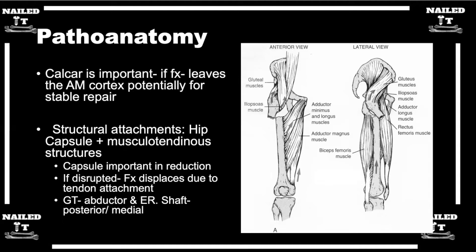In this cartoon, this is a classic subtrochanteric fracture where it exits more distal — distal to the lesser trochanter. The lesser trochanter is attached to the proximal fragment, giving it that classic flexion moment. And then the pull of the gluteus medius and minimus gives it abduction and external rotation. This is a really common clinical scenario and also a really common test question — they'll ask you about the deforming forces on it.